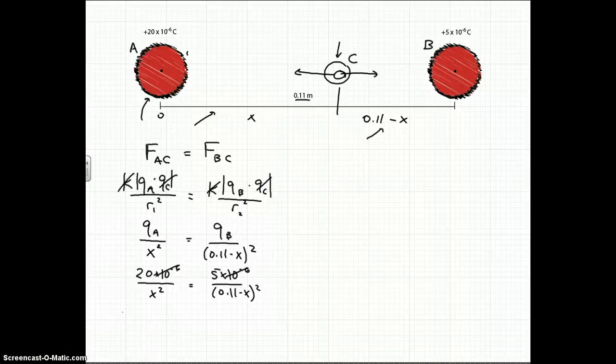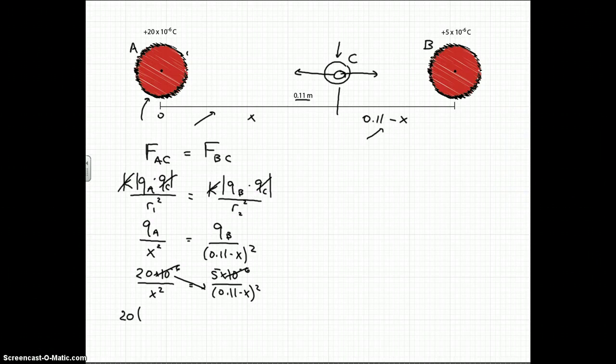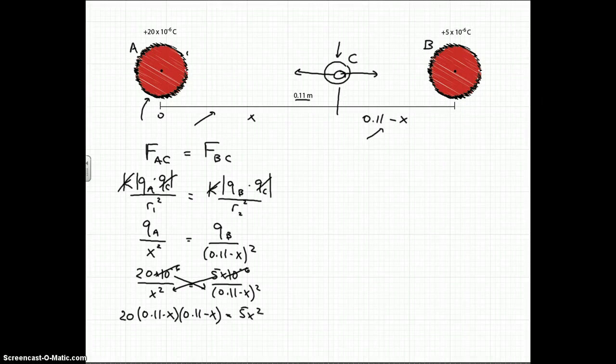So now in order to mathematically move on, we have to cross multiply. So we can just do that by going ahead and multiplying this here. So 20 times 0.11 minus x. And instead of putting the square there, I'm actually going to write this out. So it makes more sense as we expand it. And then that's going to be equal to this 5 here times x squared. Note another thing. We can factor out the 5s on both sides. So we can get rid of that 5 and we can change this to a 4 because 20 divided by 5 is 4.